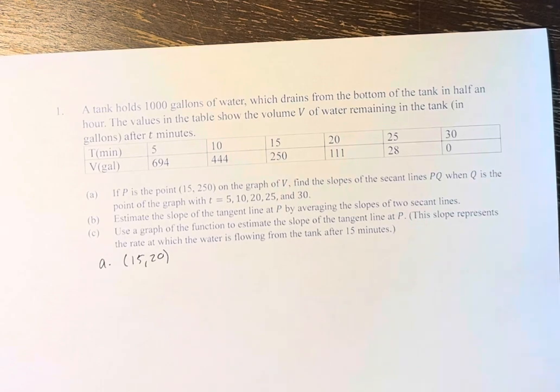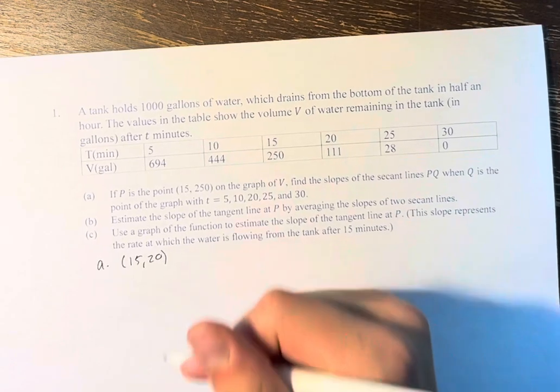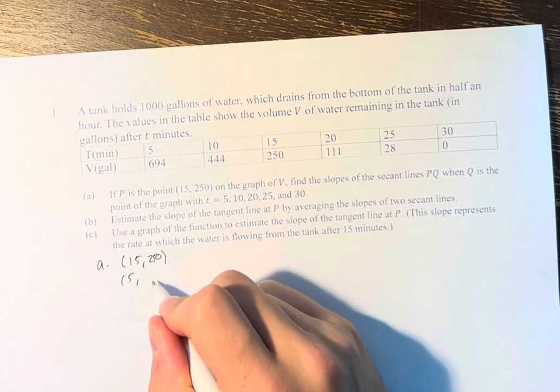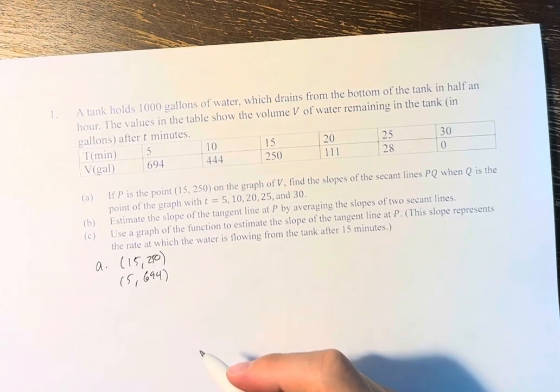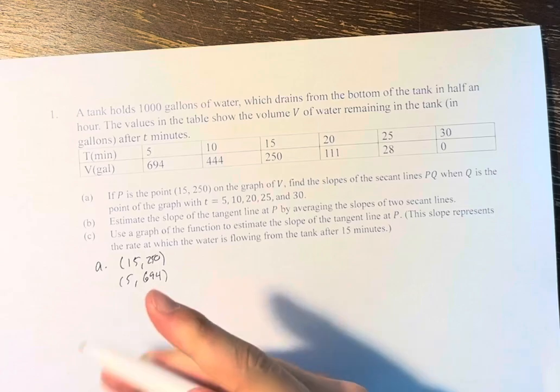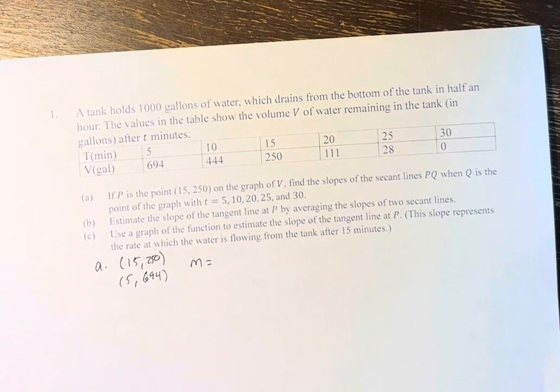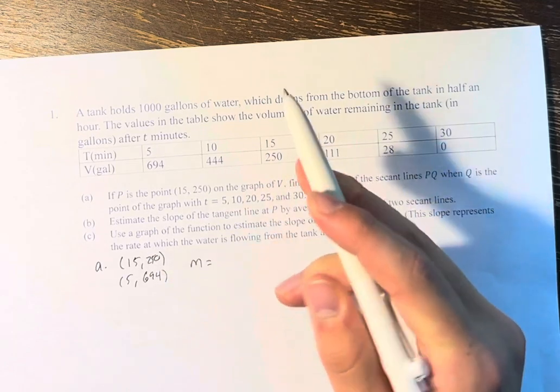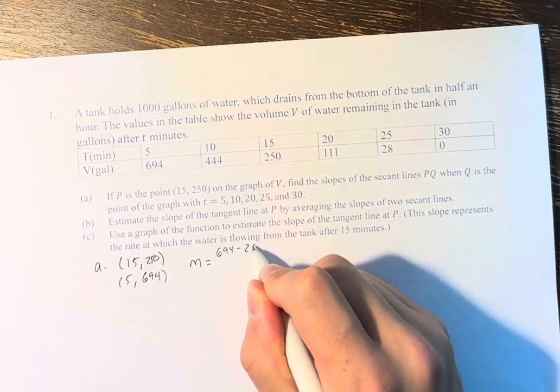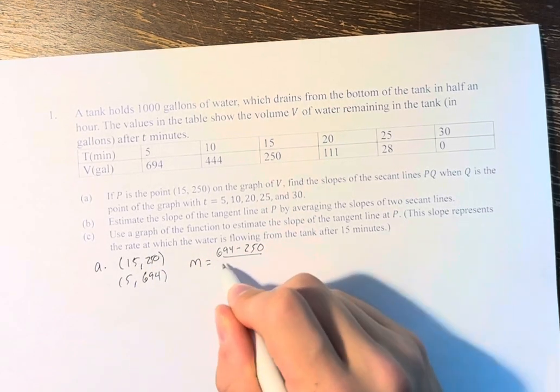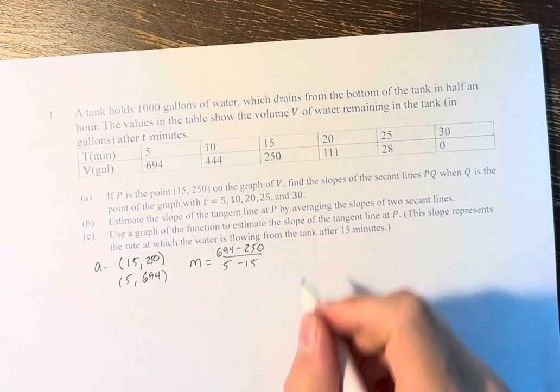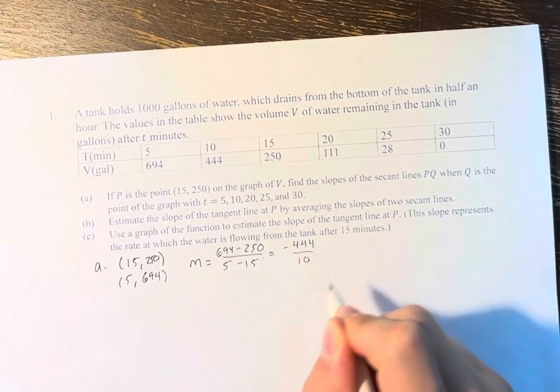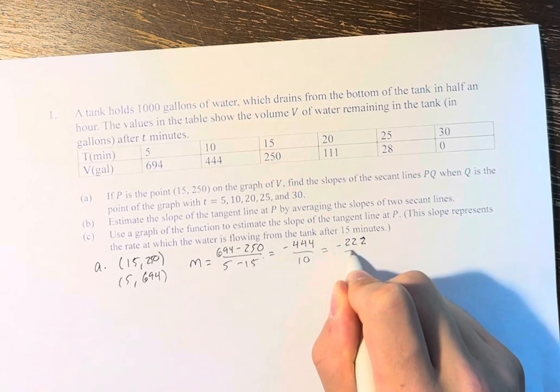So to find these lines we have to take our points. So we have 15, 250. We start with T equals 5 which is at 5, 694. And we find the slope of the secant line by just the slope between these two points. So that slope is the change in Y which is 694 minus 250 over the change in X, 5 minus 15. When you calculate this out you get negative 444 over 10 or negative 222 over 5.